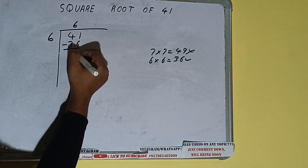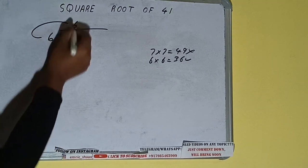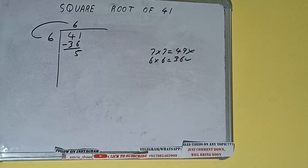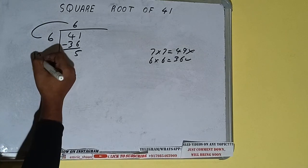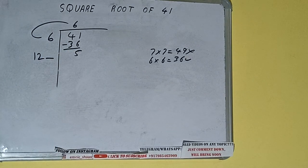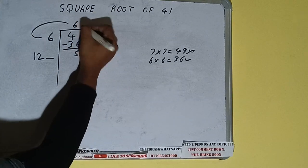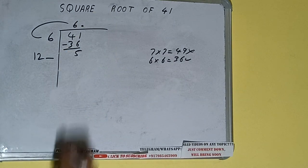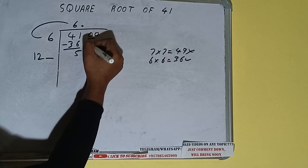Subtract, 5 will be left. We did 6 into 6, so add both—6 plus 6 will be 12. Write it here and keep a digit extra. This number we need to make big, but we don't have more pairs, so we put decimal. Once we put decimal, we can bring a pair of zeros down and the number becomes 500.